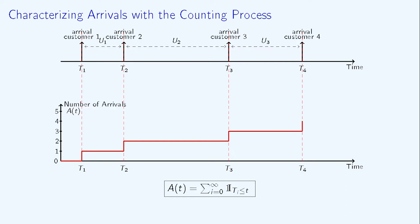The counting process A counts the number of customers that have arrived up to time t. For example, if 3 customers have already arrived at time t, then A equals 3.